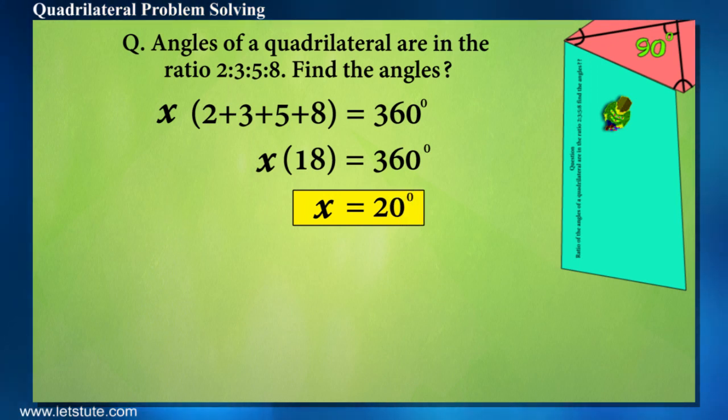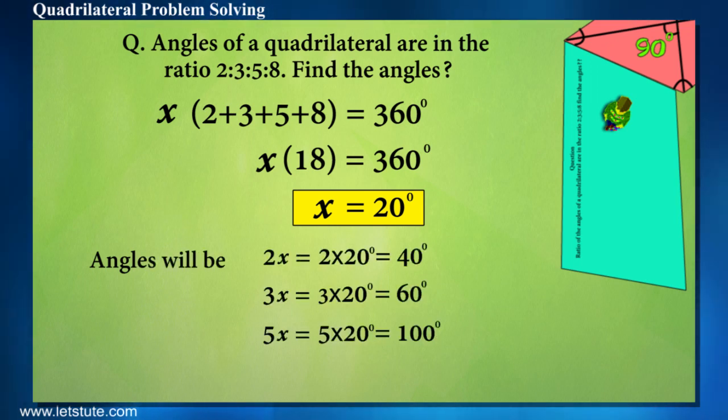Now 20 is the common factor. So the angles will be 40 degrees, 60, 100 and 160 degrees. When you add them up, you will get 360 degrees.